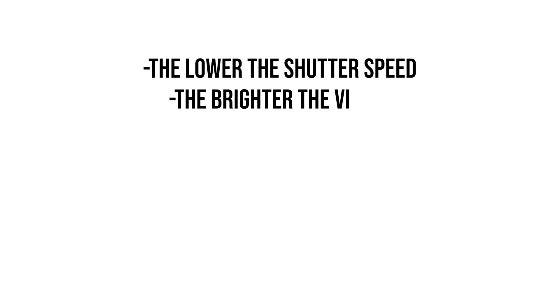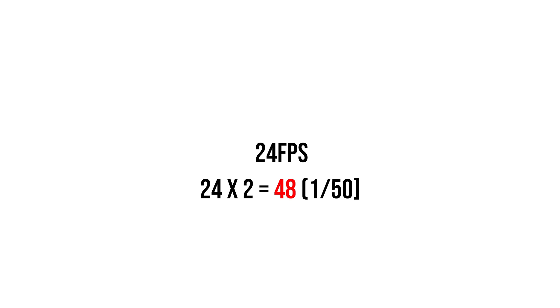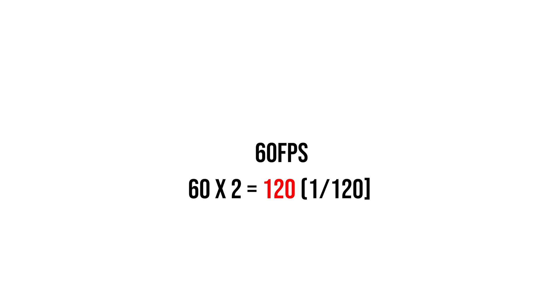Back to the video. The second thing to take with you: the lower the shutter speed, the brighter the video; the faster the shutter speed, the darker the video. And third, for the most natural look, your shutter speed should be double your frames per second. If you're shooting in 24 fps, double that — your shutter speed should be at 48, which you usually set at 50. If you're shooting at 60 fps, your shutter speed should be at 120. This will give you the most natural, real look for your film.